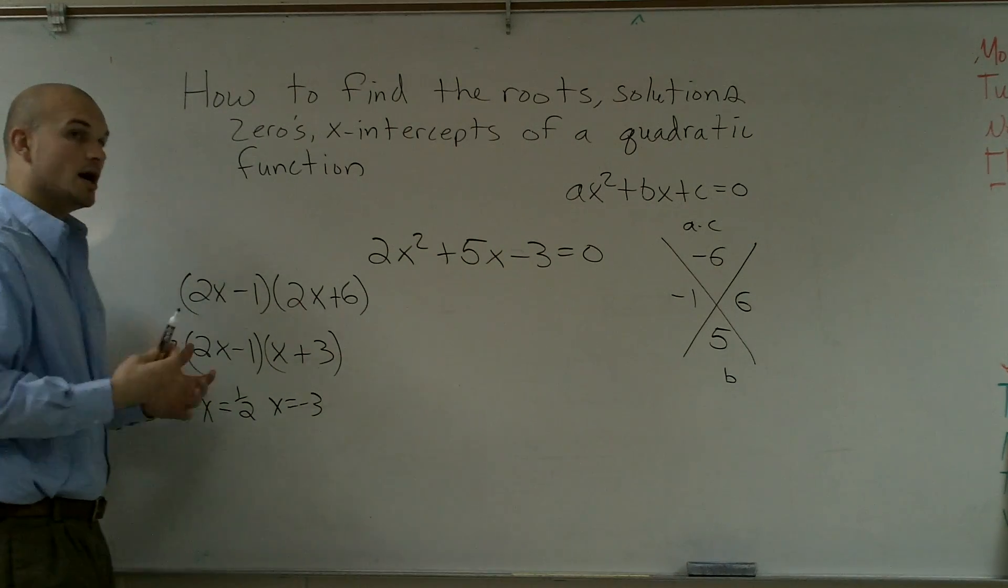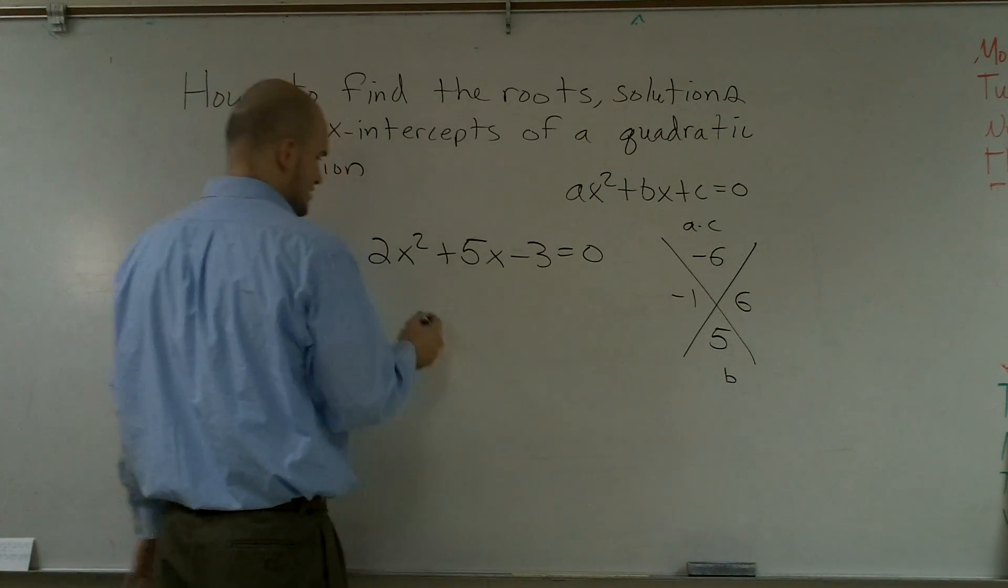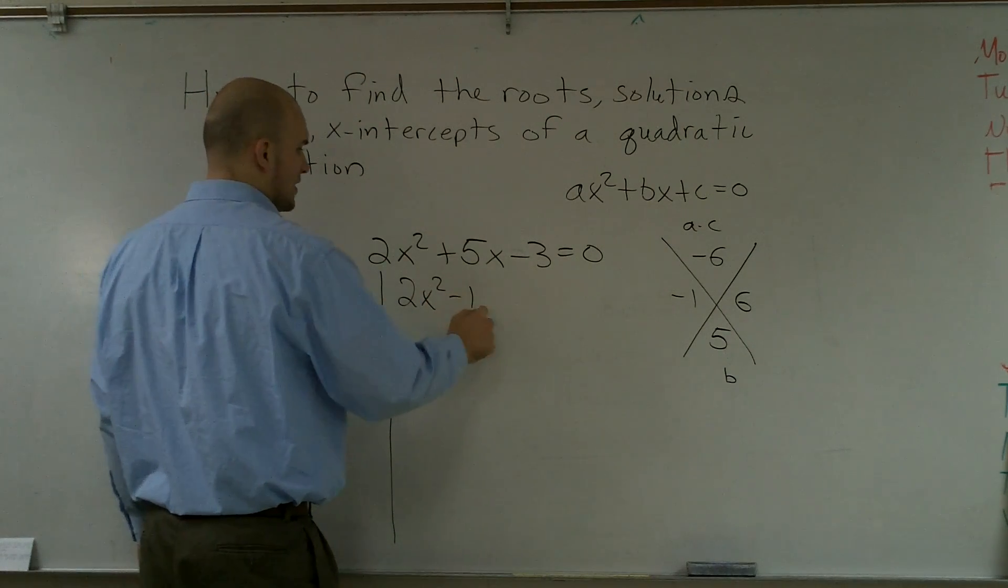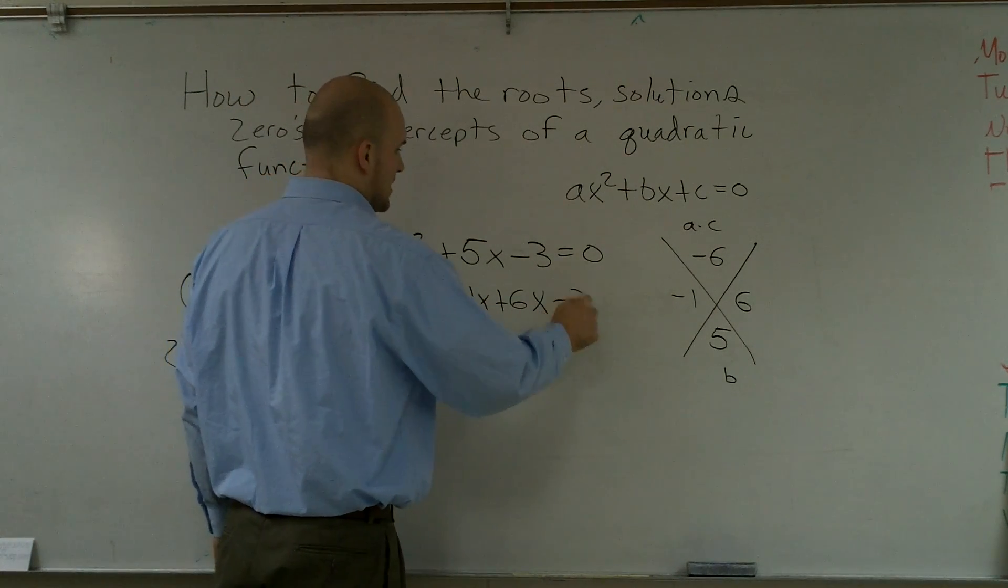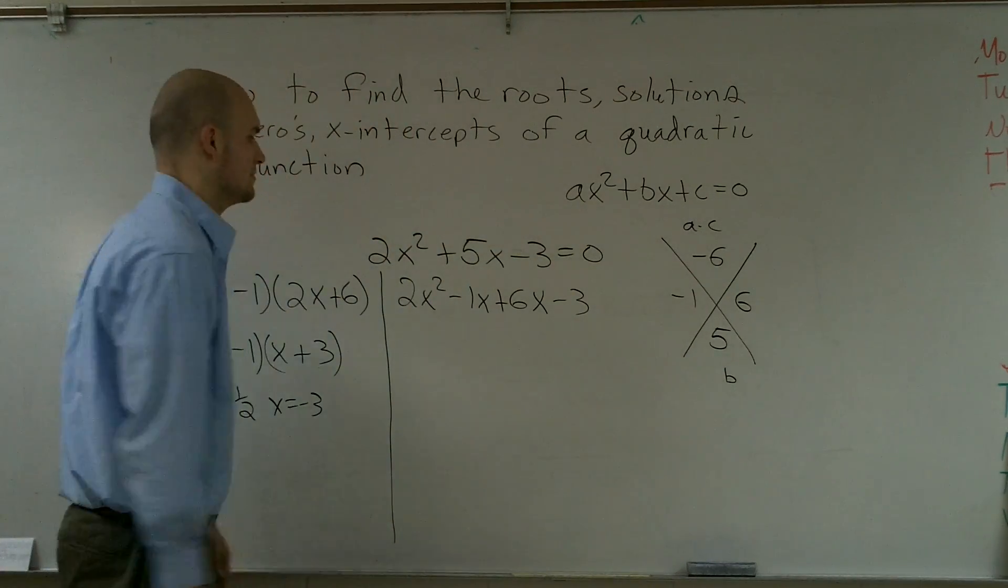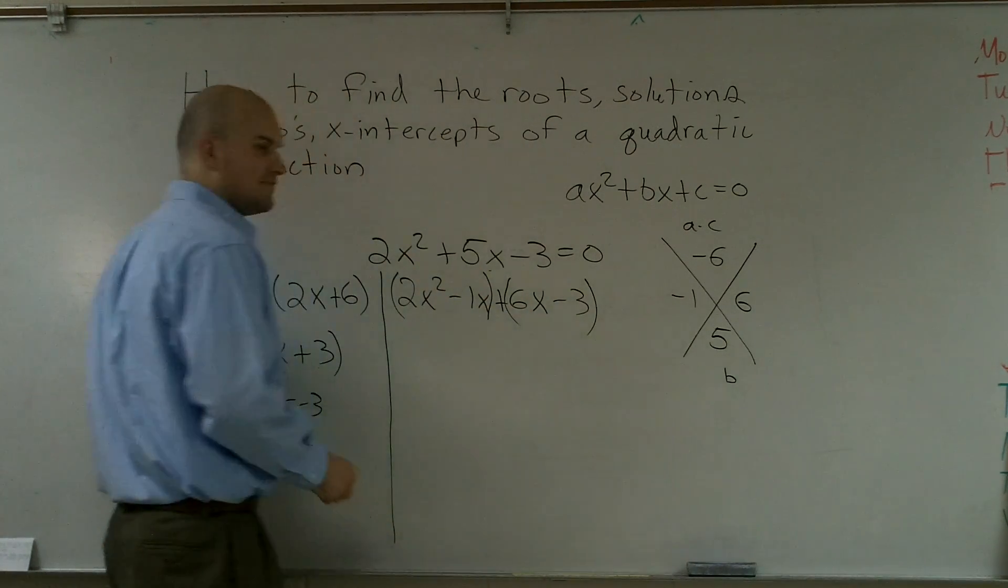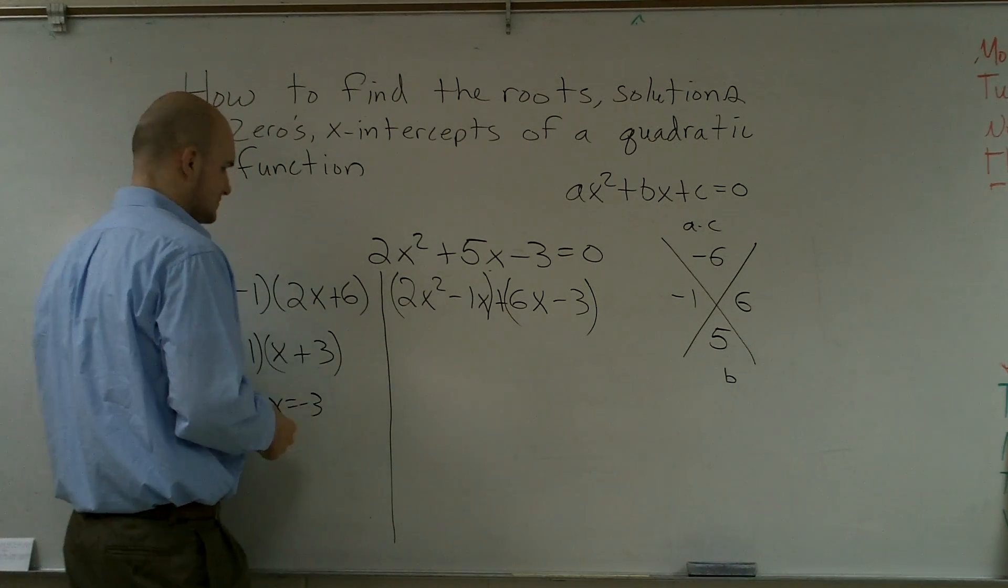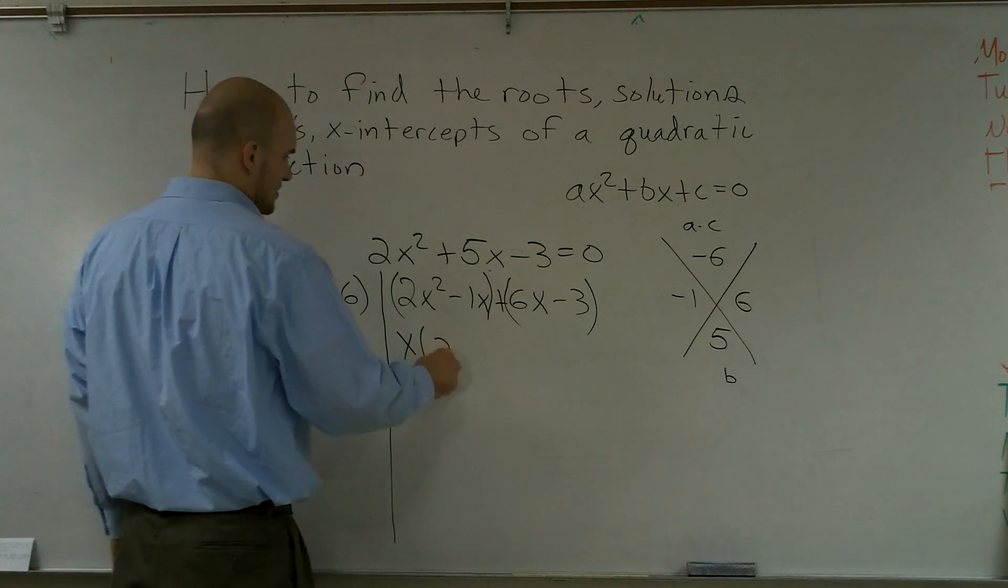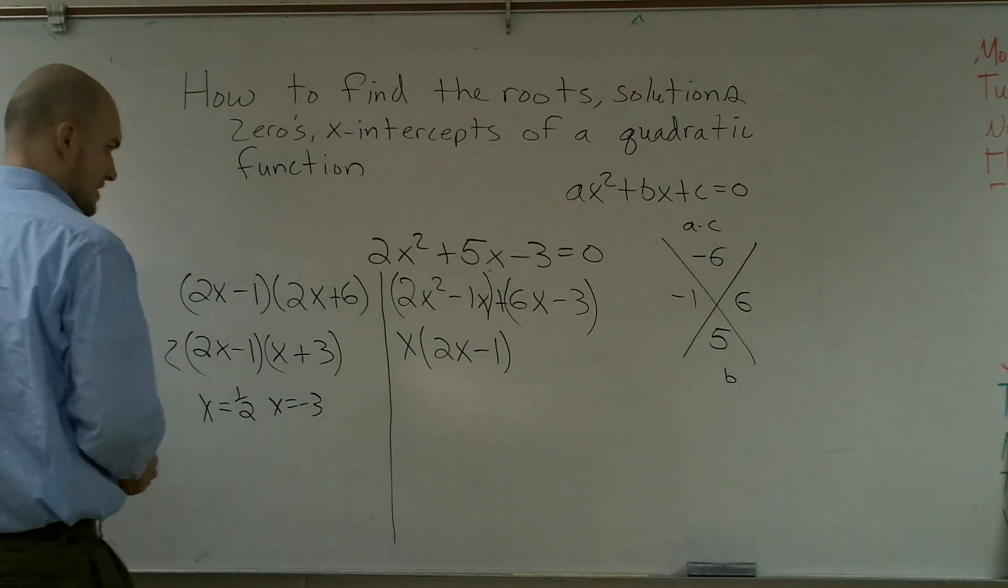You just take the a, put it in both binomials, and then factor out what they have in common. Now another method is to take your two terms and rather than writing the b term, take your two terms in there. So I could write, so that's method one. You could write 2x squared minus 1x plus 6x minus 3. So instead of writing my b term, I wrote what my two factors are.